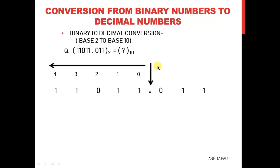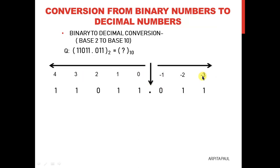For the right hand side of the decimal point, we will follow a left to right format and start the numbering from minus 1. So from left to right we write minus 1, minus 2, and minus 3. For the left hand side value you start from right to left, and for the right hand side value you start from left to right.